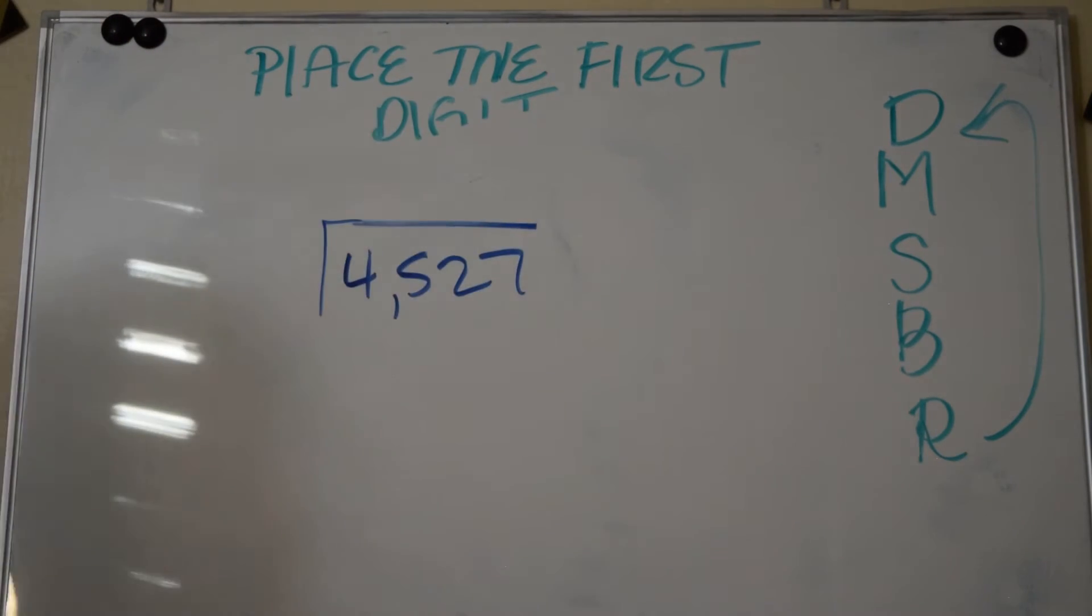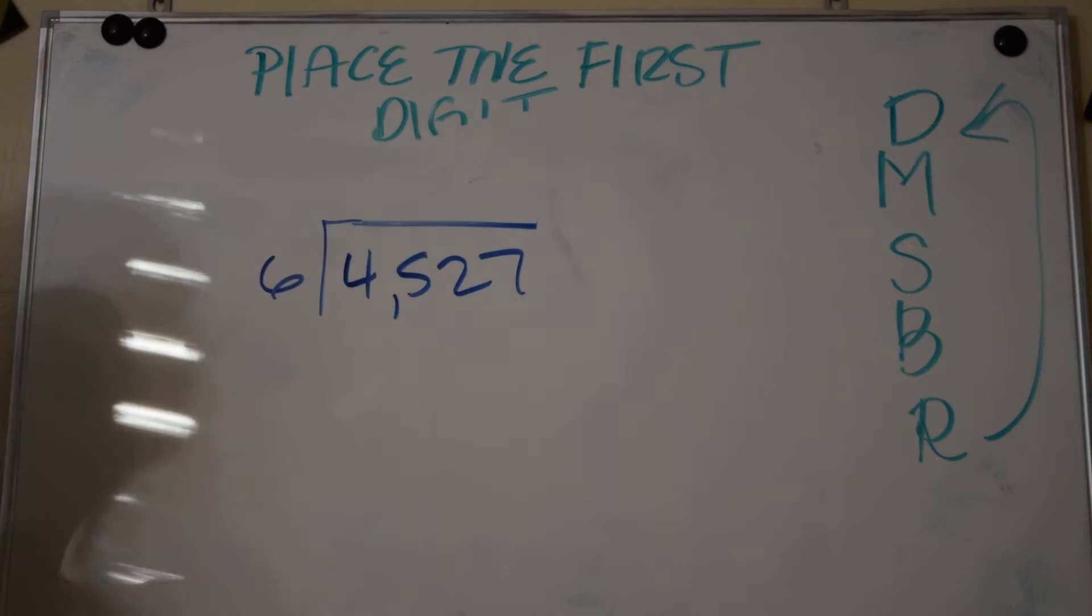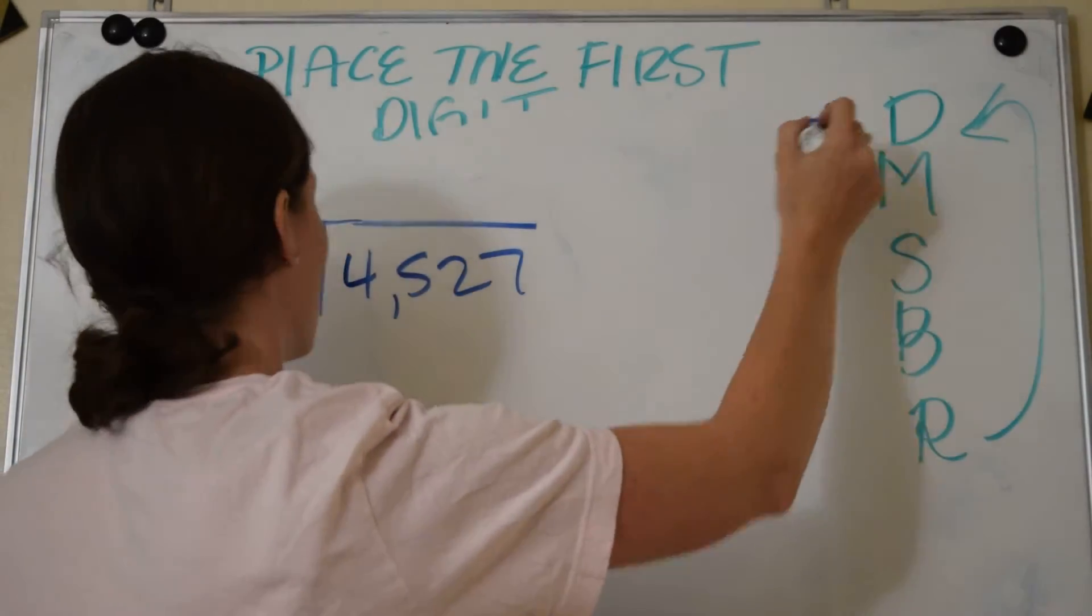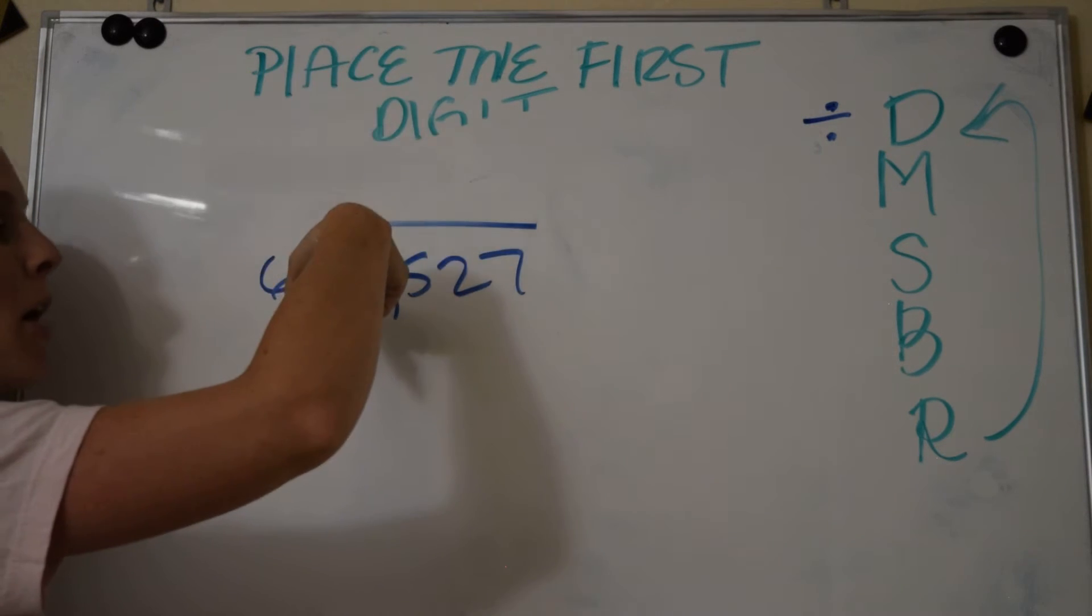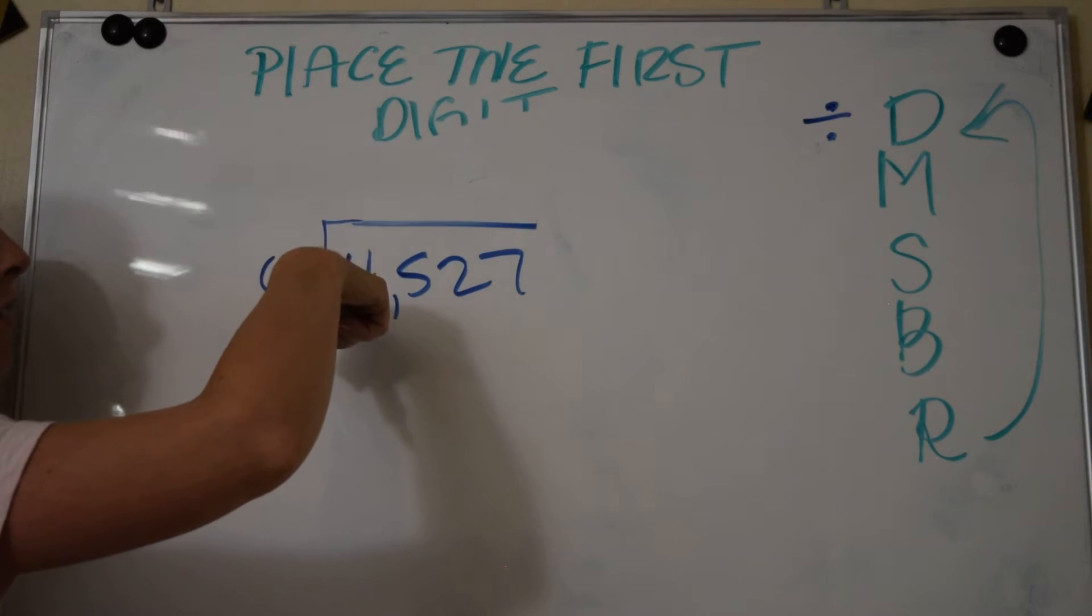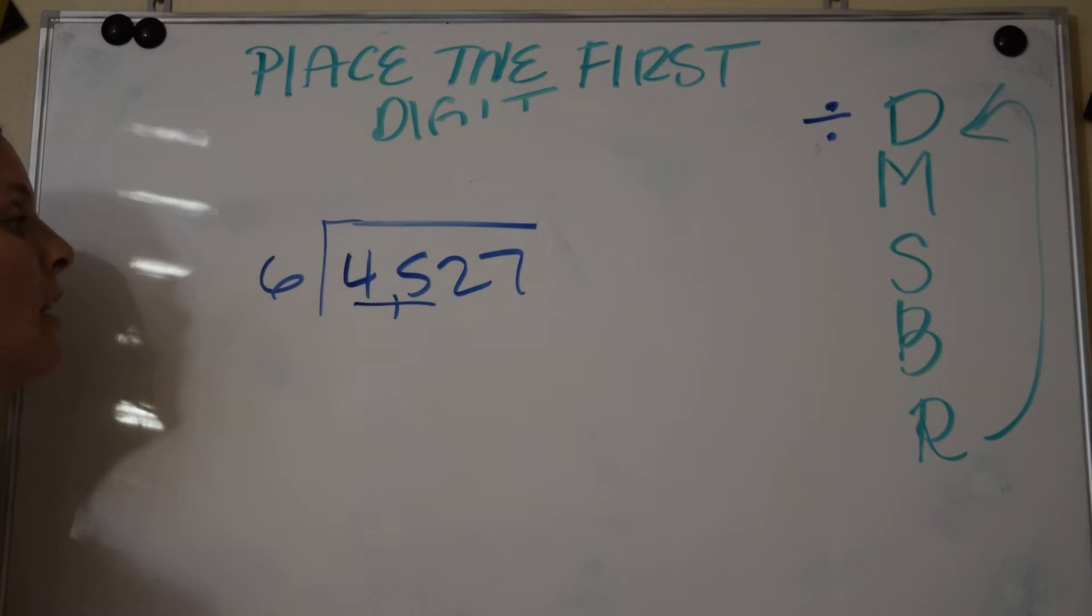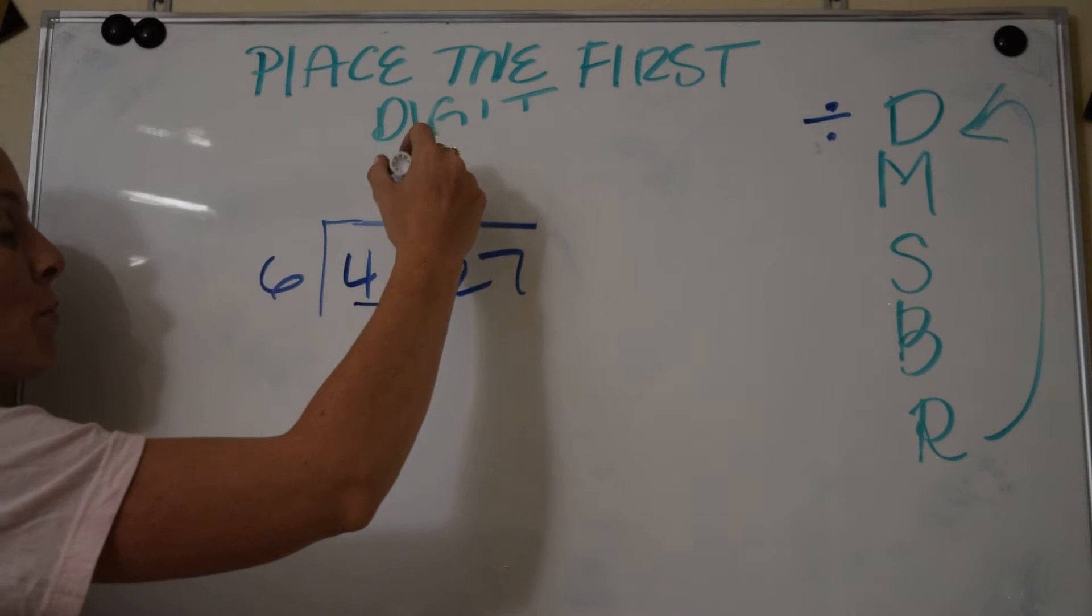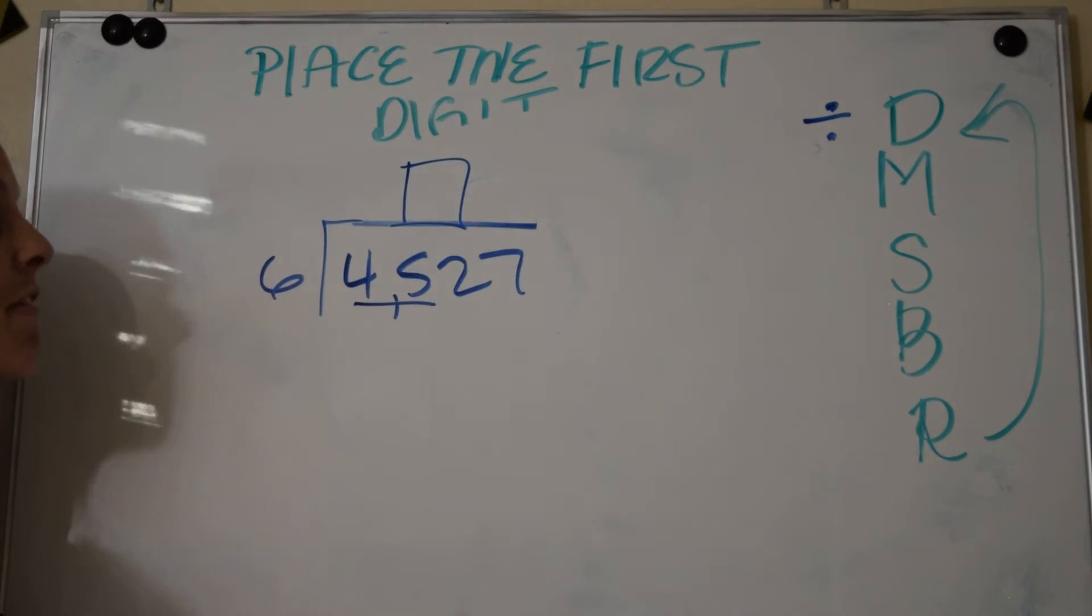Same thing, start with D. D stands for divide. Can you do a big 6 into a small 4? 6 is bigger than 4. If this number is bigger than your first digit, you have to include the second digit, which means where do you place your first digit? It's going to go above that 5, not above the 4. Now we've moved over.